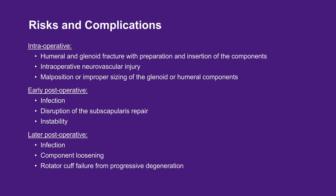Complications associated with anatomic total shoulder arthroplasty can be classified as intraoperative and postoperative. Intraoperative complications include the potential for humeral and glenoid fracture during preparation and insertion of the components; although both are very uncommon, it is more common for the humerus. Intraoperative neurovascular injury can also occur because of the proximity of the neurovascular bundle, but this is exceedingly uncommon. Other possible intraoperative complications are malposition and improper sizing of the glenoid or humeral head component. Early postoperative complications include infection, disruption of the subscapularis repair, and instability. Later postoperative complications can also include infection, component loosening, and rotator cuff failure from progressive degeneration. It is the surgeon's responsibility to minimize the risk of intraoperative complications and monitor the patients closely for the development of any postoperative complications.